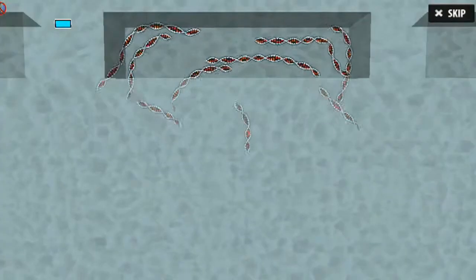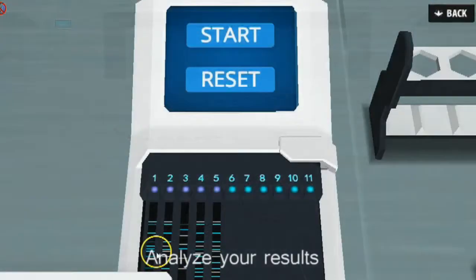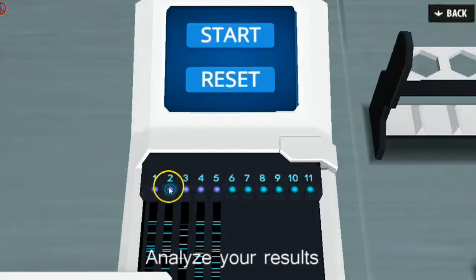Right. Now that we have enough amplified STR for analysis, we can run the gel electrophoresis. Observe the pattern. Can you find out who the murderer is?